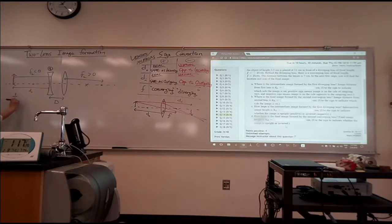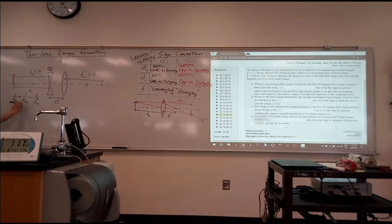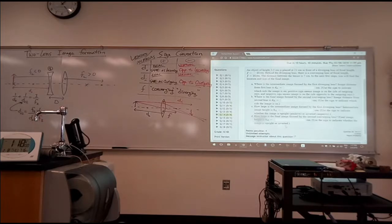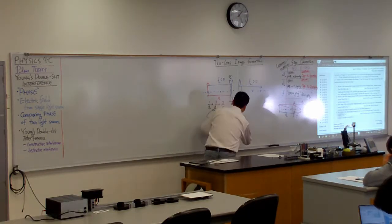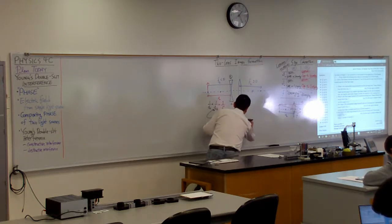The lens equation says 1/DO + 1/DI1 = 1/F1. So you go through the algebra and solve for DI1. What you will end up with is F1 times DO divided by DO minus F1. At this point I'd recommend plugging in numbers. So: minus 21 centimeters times plus 21 centimeters, divided by 21 minus (minus 21).